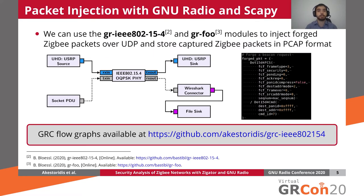Moving on to the second functionality that we need for our testbed — the ability to inject arbitrary packets — we can easily achieve that using GNU Radio and SCAPY. More specifically, we can use the GNU Radio companion flow graph shown on this slide to not only inject forged Zigbee packets, but also to store captured Zigbee packets in pcap format. This is made possible using two key blocks from the GR IEEE 802.15.4 and GR foo modules written and maintained by Bastian Bloessl. Regarding the forging component, we can see in the code snippet how easily we can forge a beacon request with SCAPY.